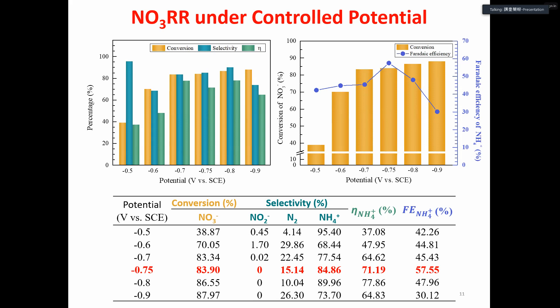This improves the Faraday efficiency to 58%. We can also notice that when we increase the potential, the Faraday efficiency starts dropping. This is because the potential is approaching water reduction potential.